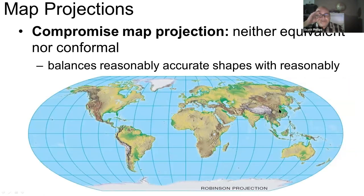For practical purposes, we often use what's called a compromise projection. These sort of balance those two out. They're not equivalent or conformal, but they're a reasonable compromise between the two.